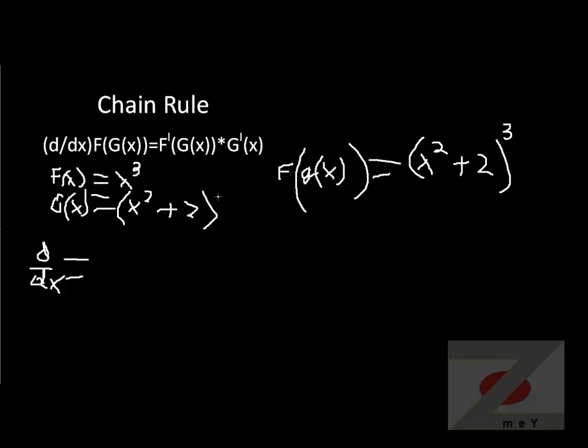d/dx equals derivative of outer, inner plugged. Outer is x cubed, so the derivative is 3. I'll put parentheses here, it's squared because 3 minus 1 is 2. And inner plugged means we plug in inner. g(x) is inner, so we copy x squared plus 2. Times derivative of inner. Derivative of inner is 2x. This is our chain rule.